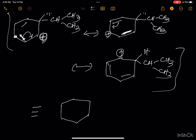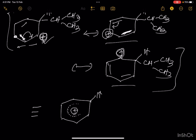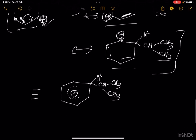The resonance hybrid can be written with the benzene ring shown with a circle inside, indicating delocalization. In each resonating structure there are two double bonds, so one-third of the ring is cancelled and the positive charge is shown at the middle of the ring. The CH with CH3-CH3 (isopropyl group) is attached.